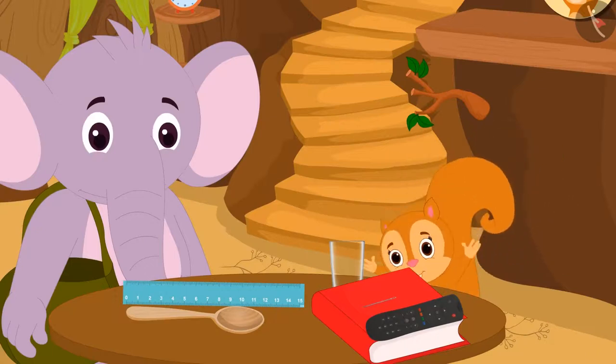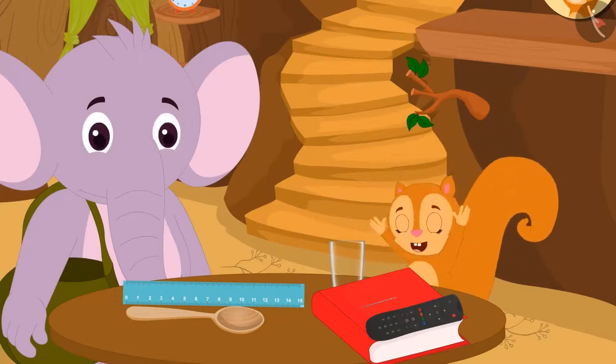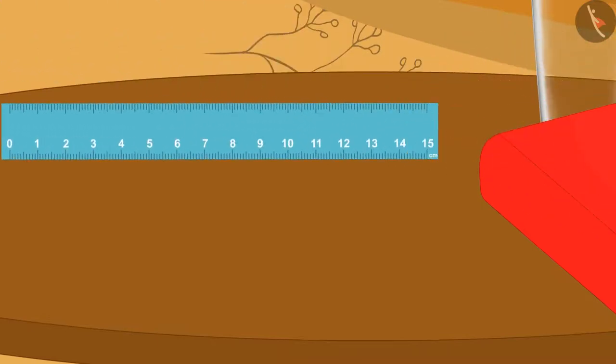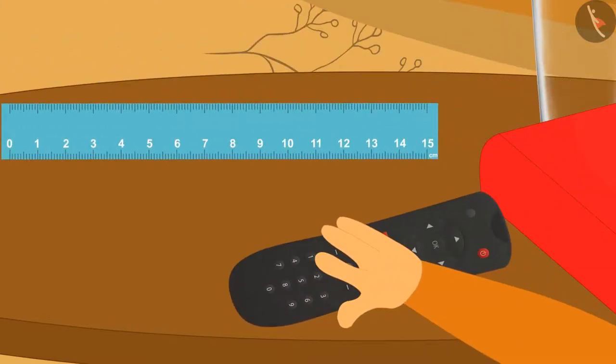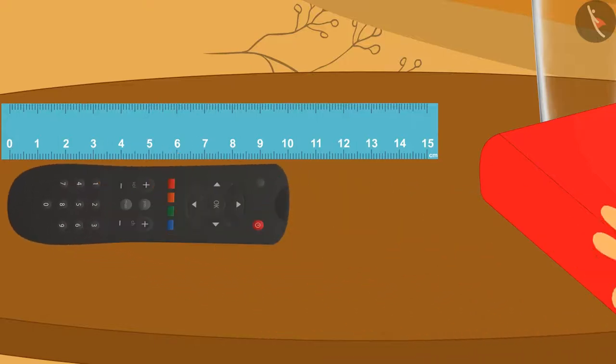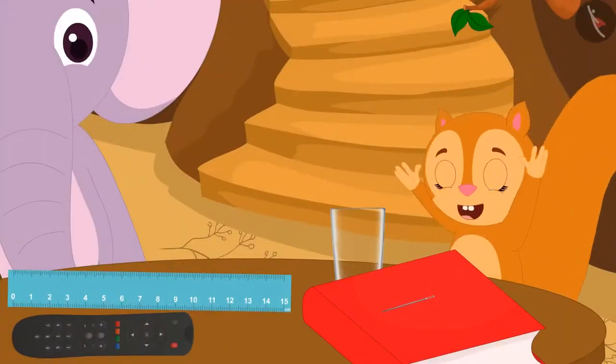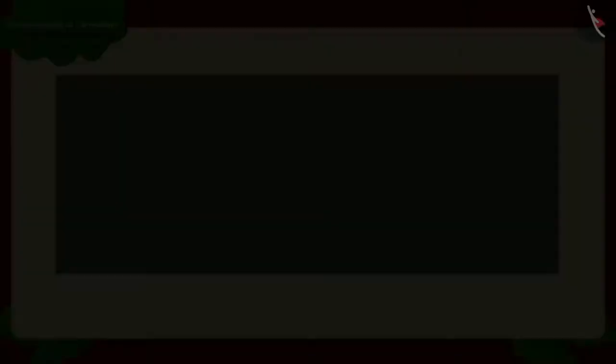Chanda got really excited about the ruler. She immediately took the ruler from Appu and placed her TV remote next to the ruler. Chanda told Appu, look Appu, my TV remote is 10 centimeters long. I learned to measure the length of objects from the ruler. After saying this, Chanda started dancing happily.